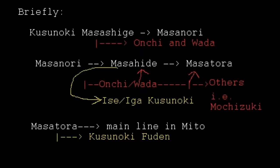On the screen there is a chart — a very simplified chart. In white you have the main line from Kusunoki Masashige down through Masanori, Masanori through Masahide, Masahide to Masatora, and Masatora to the main line in the Mito domain during the 1600s and 1700s.